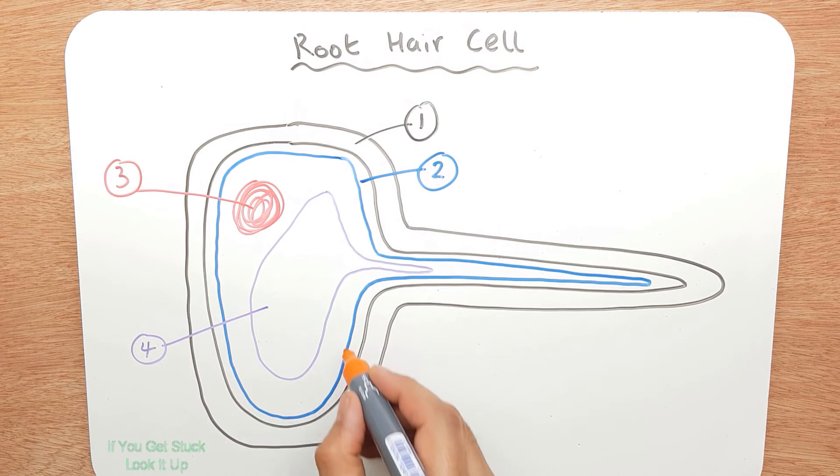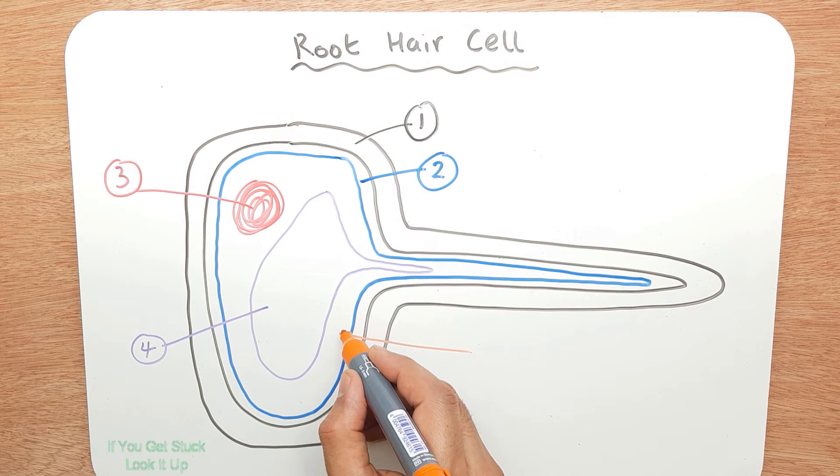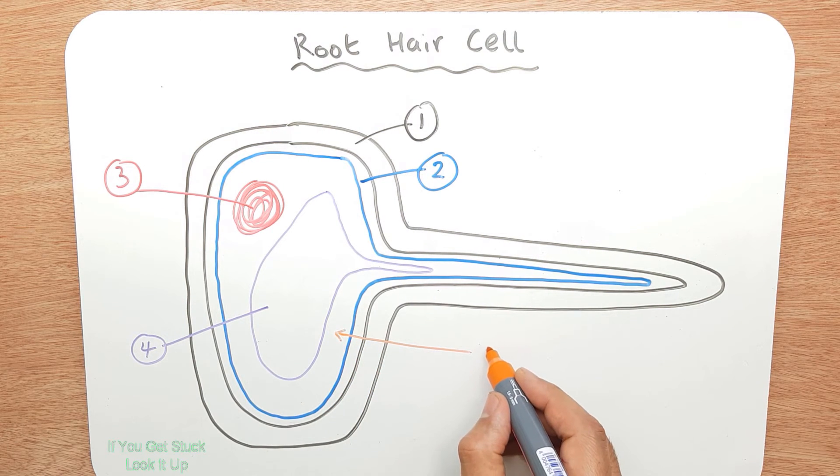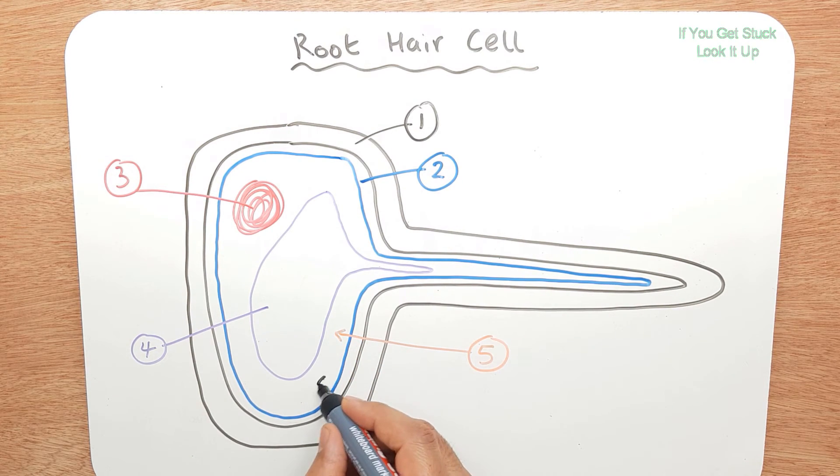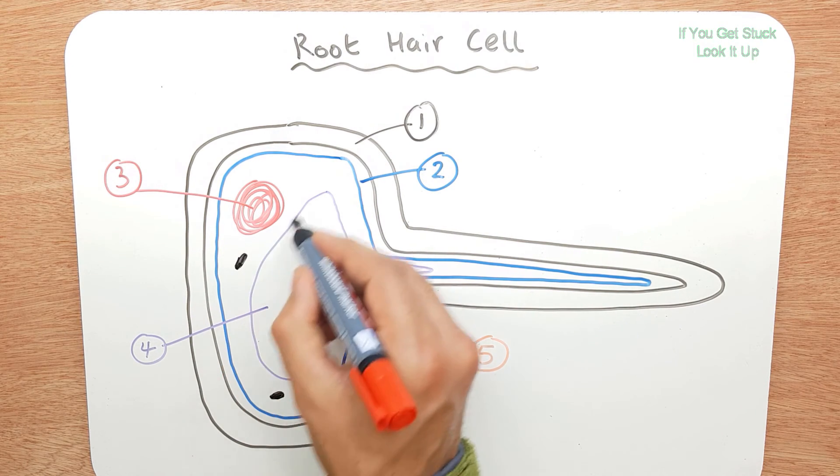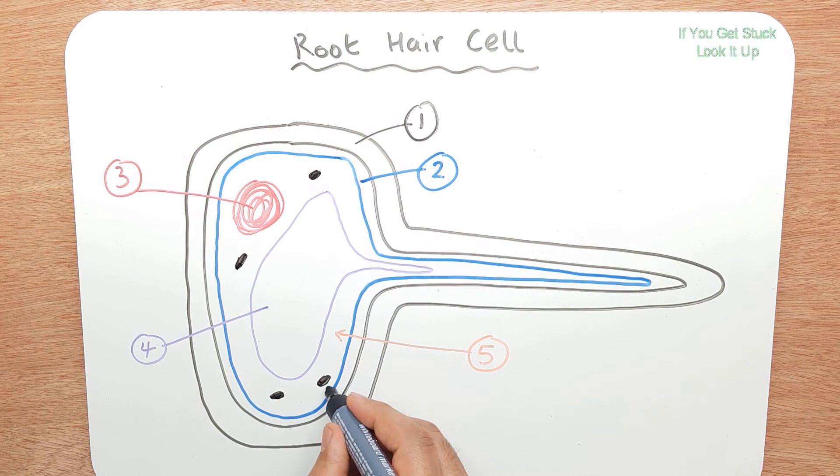That is called the vacuole. Then you've got the liquidy part, the jelly inside. And then you've got these little units or organelles, root hair cells that are responsible for energy.